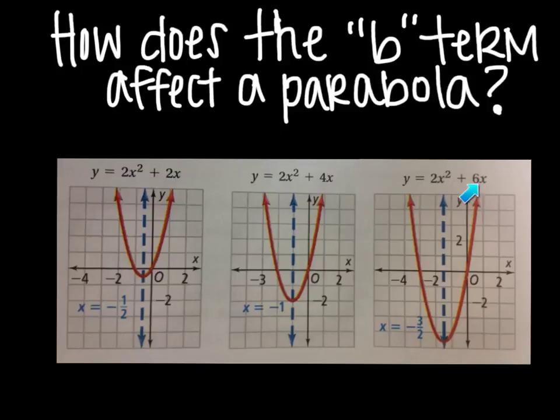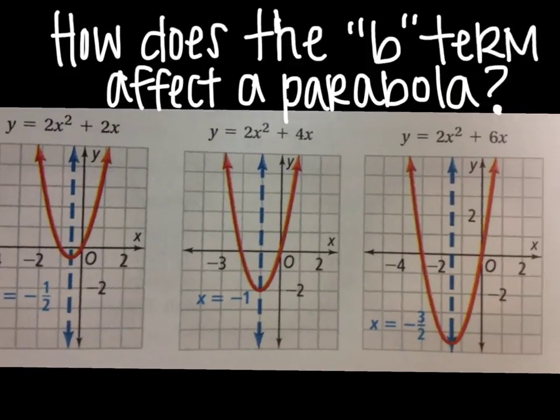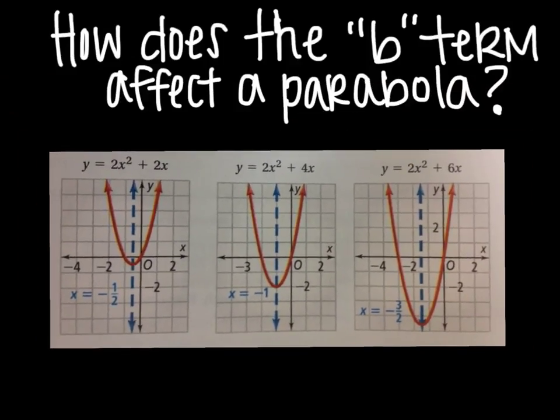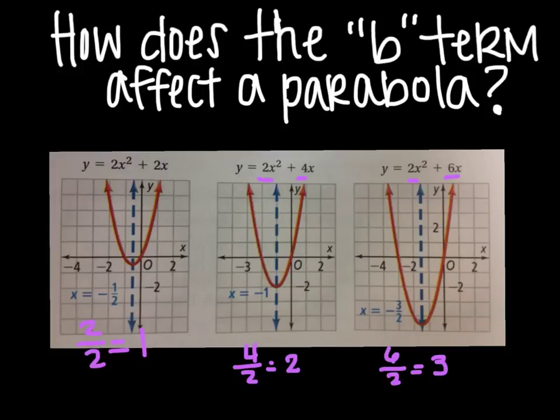So we're focusing on what happens when that b term changes. Now if you look at the axis of symmetries on these, you can see that they did in fact change. And the axis of symmetry is related to the ratio of b to a. So your equation is 2x squared plus 2x. So the b to a ratio in this case would be 2 over 2, which is in fact 1. In this case the b to a ratio would be 4 over 2, which is in fact just 2. And then same with here, b over a, it is 6 over 2 equals 3. And then you can see kind of what happens here.